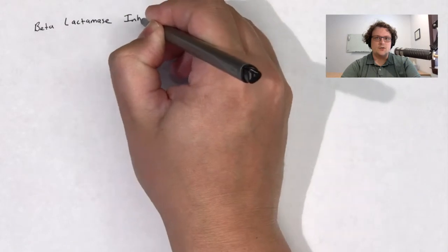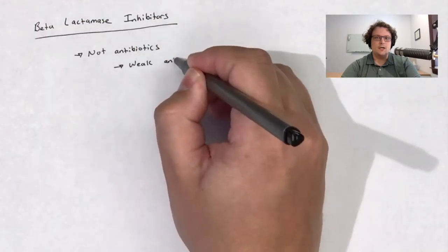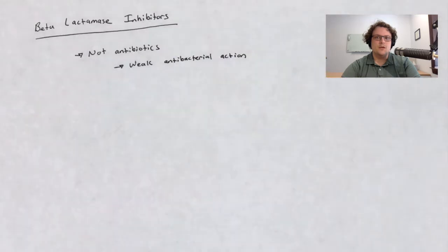Beta-lactamase inhibitors are actually not antibiotics. They resemble beta-lactam molecules, i.e., penicillins and cephalosporins, but they have a very weak antibacterial action.